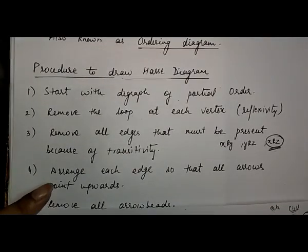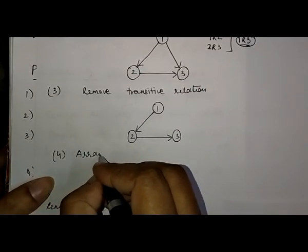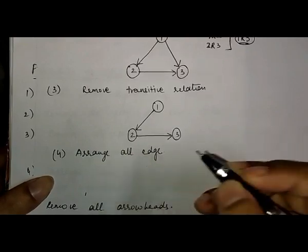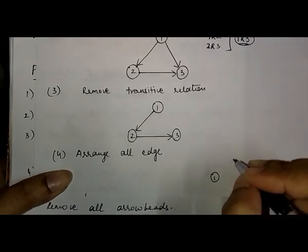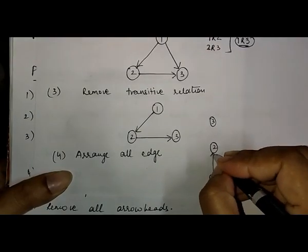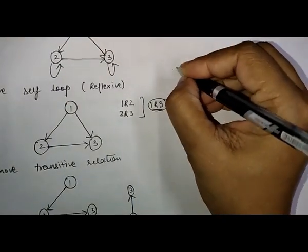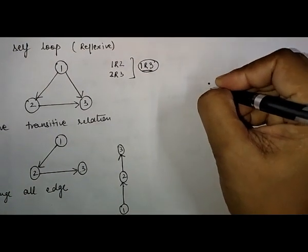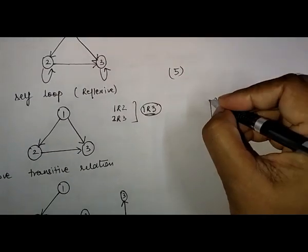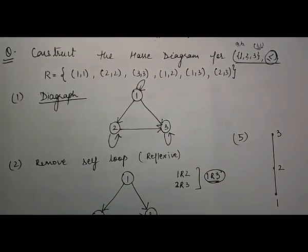The next step is to arrange all edges so that all arrows point upwards — edges 1→2 and 2→3, arranged so that 1 is at the bottom, 2 in the middle, and 3 at the top, all pointing upward. The last step is to remove all the arrowheads and represent all nodes with a single point. This is 1, this is 2, and this is 3. This is how we prepare the Hesse diagram for this particular question.